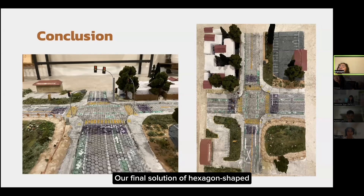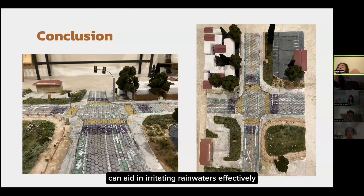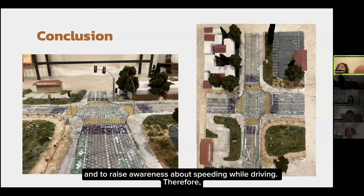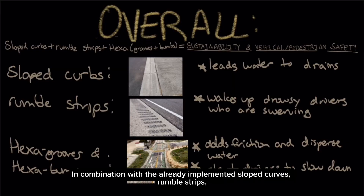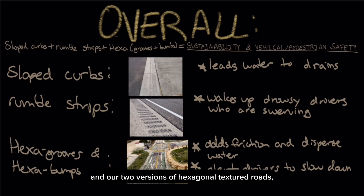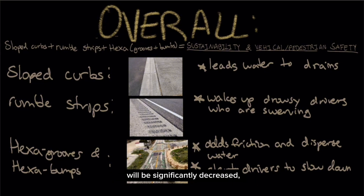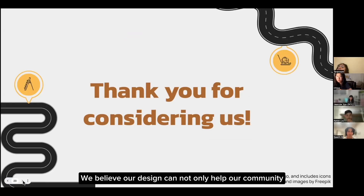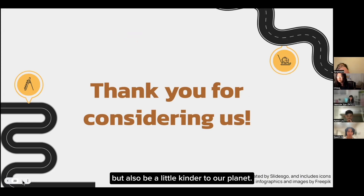Our final solution of hexagonal-shaped grooves with an indented outline can aid in irrigating rainwater effectively and raise awareness about speeding while driving. Therefore, in combination with the already implemented sloped curves, rumble strips, and our two versions of hexagonal textured roads, the risks of hydroplaning and skidding would be significantly decreased, all the while increasing driver attentiveness and sustainability. We believe our design can not only help our community reduce traffic accidents, but also be a little kinder to our planet. Thank you for considering us.